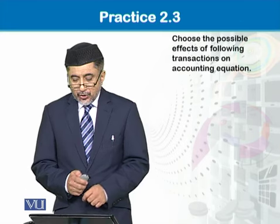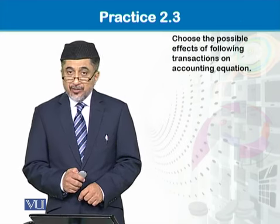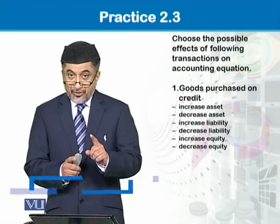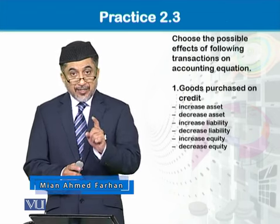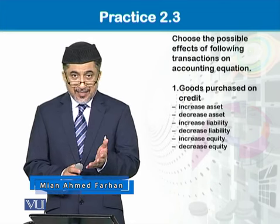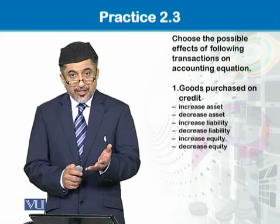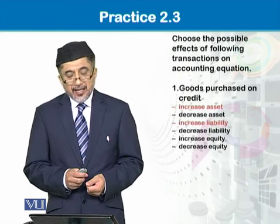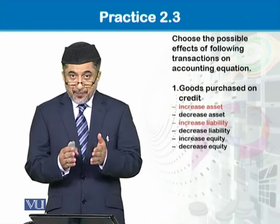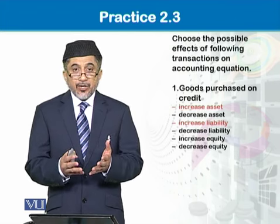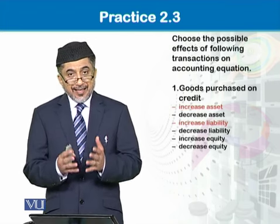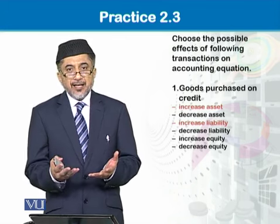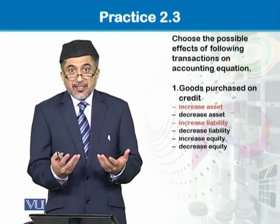We have to choose the possible effects of transactions on the accounting equation. Number one is goods purchased on credit. Recall your knowledge — buying goods on credit is a credit transaction and it is increasing stock. Increasing stock means an increase in asset, and since it is a credit transaction it is increasing our liability. Whenever we buy goods we have to pay suppliers in future, so making payment in future is our liability — it is increasing our obligation.